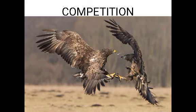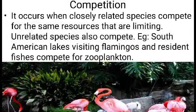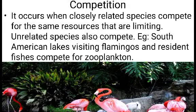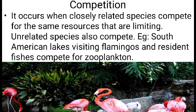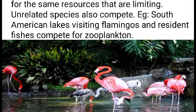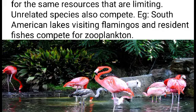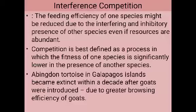Generally, competition occurs when closely related species compete for the same resources that are limiting. But this is not always true. Even totally unrelated species could also compete for the same resources. For example, in the shallow South American lakes, the visiting flamingos compete with the resident fishes for the common food — the zooplankton present in the lake.